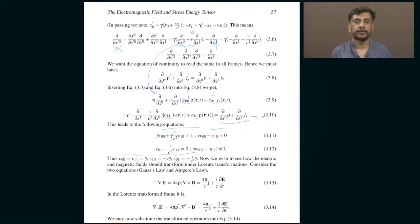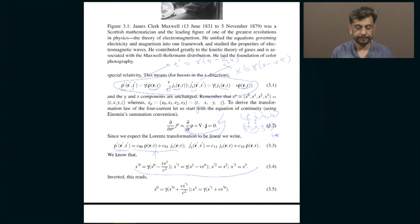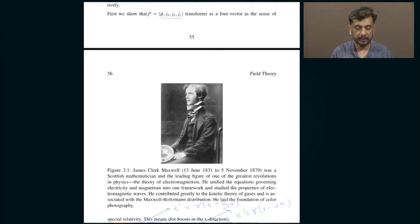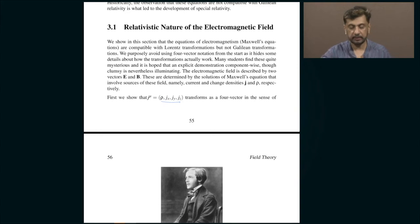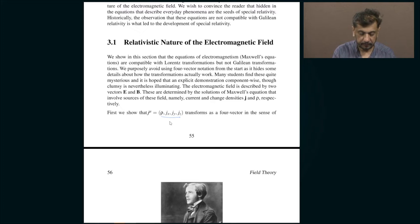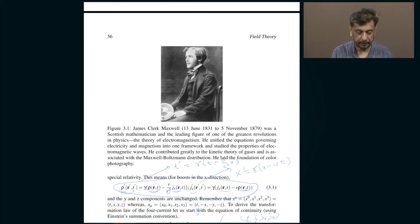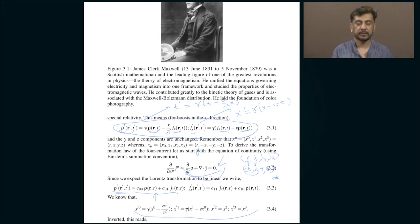In today's class we are going to continue our discussion of the relativistic nature of Maxwell's equations. In the last class I had shown how the collection of density and components of current form a relativistic four-vector. You can construct this object which has four components: the first component is the density, and the other three components are the x, y, z components of the current density.